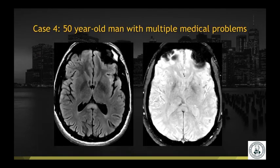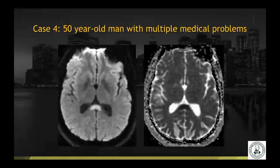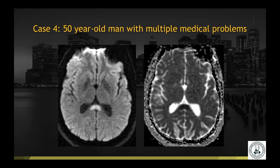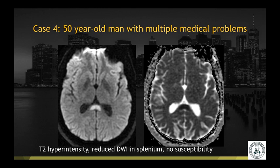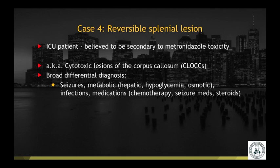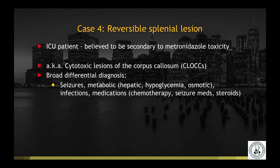Case number four: a 50-year-old man with multiple medical problems. Axial T2 FLAIR, axial susceptibility weighted imaging, axial diffusion, and ADC demonstrate T2 hyperintensity and reduced diffusion in the splenium of the corpus callosum, with no abnormal susceptibility to suggest hemorrhage. This is known as a reversible splenial lesion, or cytotoxic lesion of the corpus callosum. The key thing is to know that there's a broad differential diagnosis — it can be seen with seizures, various metabolic disorders including hepatic encephalopathy, hypoglycemia, osmotic demyelination, certain infections, and medications. This patient was in the ICU, and it is believed to be secondary to metronidazole toxicity.